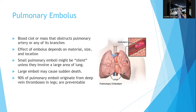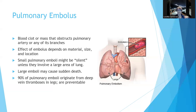A pulmonary embolus is a blood clot or mass that obstructs the pulmonary artery or any of its branches. The effect depends on what it's made of, how big it is, and where it's located. Small pulmonary emboli might be silent unless they involve a large area of the lung, while a large embolus can cause sudden death. An embolus is essentially a thrombus that breaks off and travels somewhere else, like the lungs.